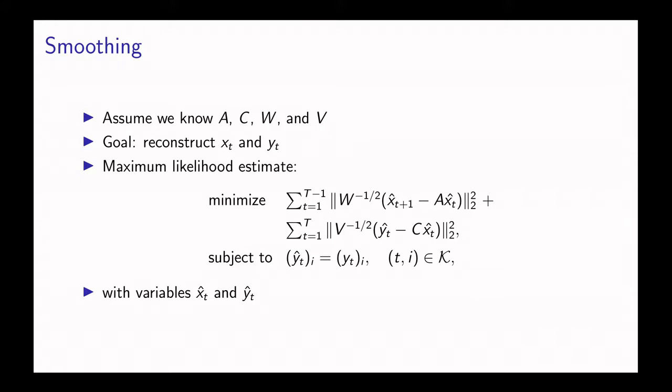Because the noise is Gaussian, the distribution over states and measurements is jointly Gaussian, so we can construct a maximum likelihood estimate of the sequence of states and measurements by solving this optimization problem, finding the maximum likelihood estimate.